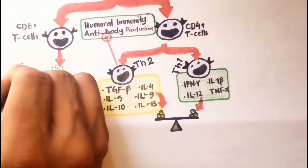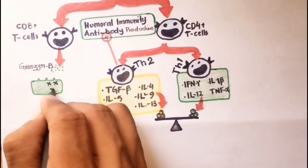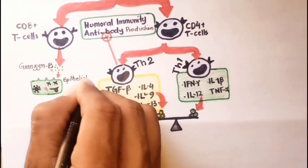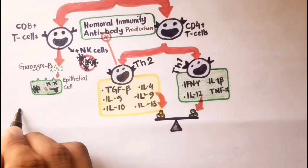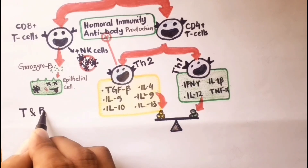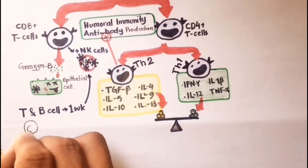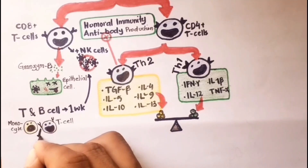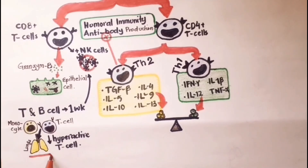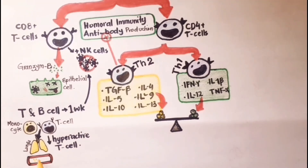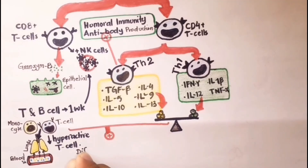CD8+ T lymphocytes and cytotoxic cells secrete cytotoxic molecules such as Granzyme B that kill infected epithelial cells. CD8+ T lymphocytes and natural killer cells play a critical role in viral clearance. Both T and B cell responses against COVID-19 are observed in systemic blood flow one week after initiation of symptoms. Patients with COVID-19 show an accumulation of mononuclear cells, likely monocytes and T cells, in the lungs with low levels of hyperactive T cells in peripheral blood, suggesting T cells are attracted from systemic blood to the infected site.